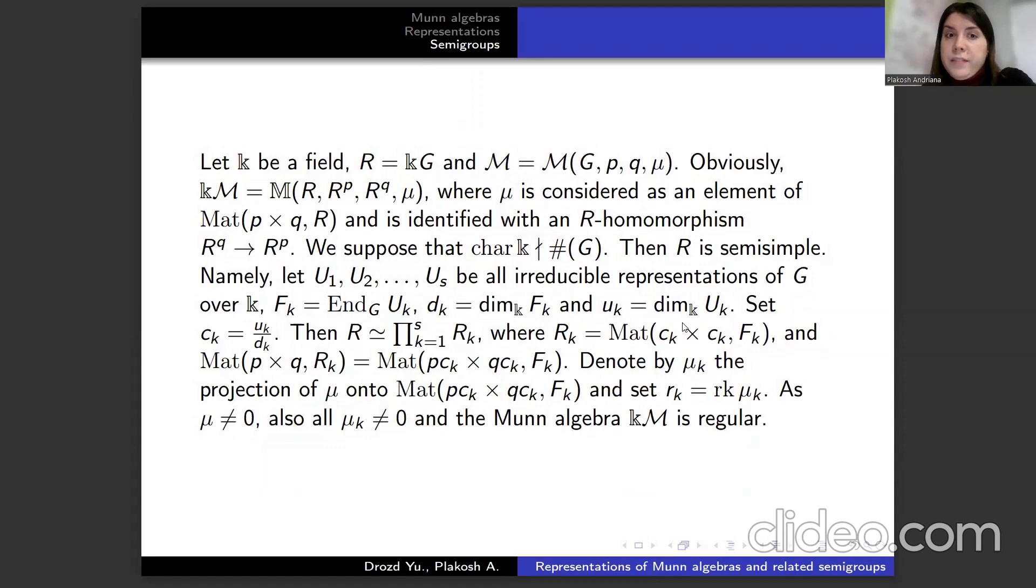Let k be a field, R is k[G], and μ is considered as our M on R^p, R^q. We suppose the characteristic k does not divide order G. Then R is semi-simple.